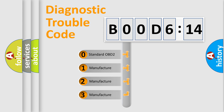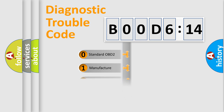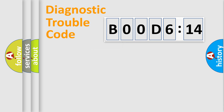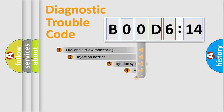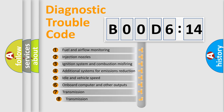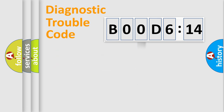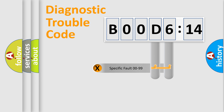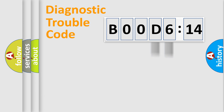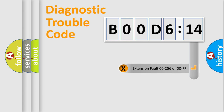If the second character is expressed as zero, it is a standardized error. In the case of numbers 1, 2, or 3, it is a more specific expression of a car-specific error. The third character specifies a subset of errors. This distribution is valid only for the standardized DTC code. Only the last two characters define the specific fault of the group.